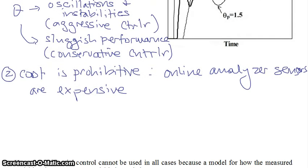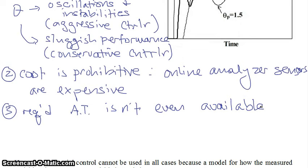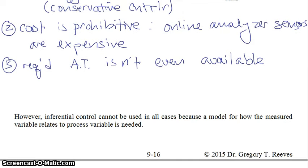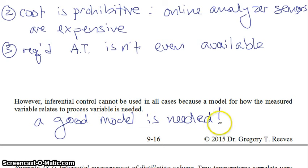Another reason to use inferential control is that the required analyzer sensor transmitter isn't even available — in other words, no one has ever developed a sensor that does that. For inferential control to work, you have to be able to measure one of the easily measured process variables, like temperature or pressure, and relate that back to your composition variable. A good model is needed — just like in feed forward control, you need a good model, and you would also need a good model here in inferential control. So let's take a look at a quick example of that.